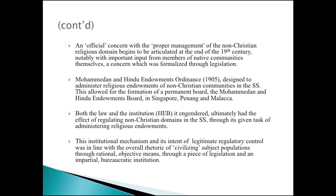One important piece of legislation was the Mohammedan and Hindu Endowments Ordinance of 1905, designed to administer religious endowments of non-Christian communities in the Strait Settlements. This also allowed for the formation of a permanent Mohammedan and Hindu Endowments Board, set up in 1906, 1907, and 1911 for Singapore, Penang and Malacca. We still have the Hindu Endowments Board with us today. This institutional mechanism and its intent of legitimate regulatory control was in line with the overall rhetoric of civilizing subject populations through rational, objective means.